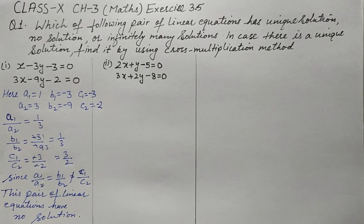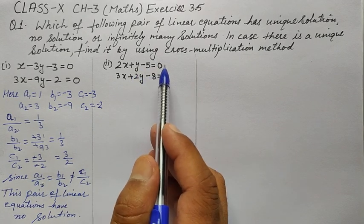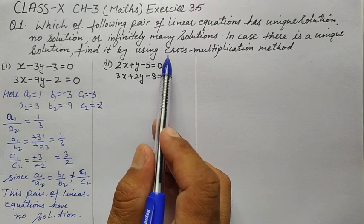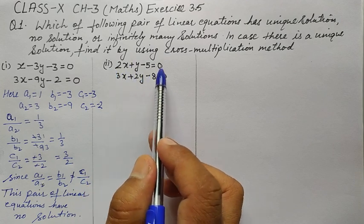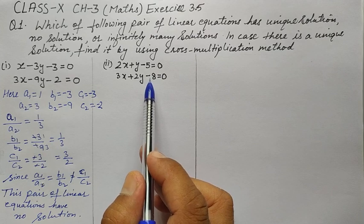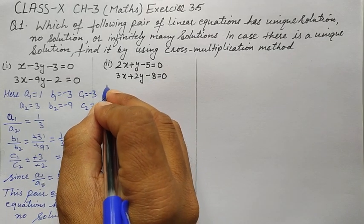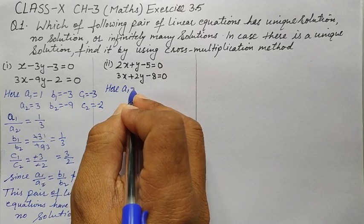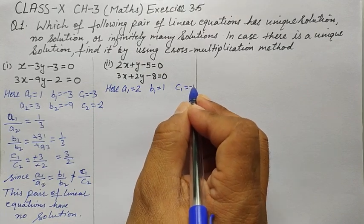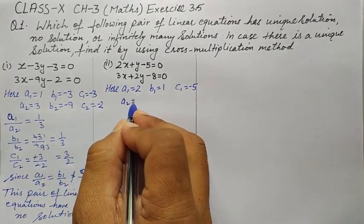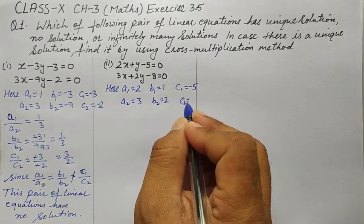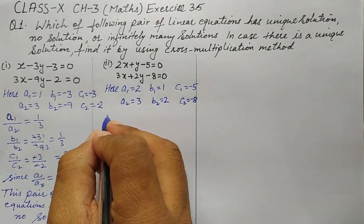For Part 2, the equations are 2x + y − 5 = 0 and 3x + 2y − 8 = 0 (brought to standard form by moving constants to the left-hand side). So a1 = 2, b1 = 1, c1 = −5, and a2 = 3, b2 = 2, c2 = −8.